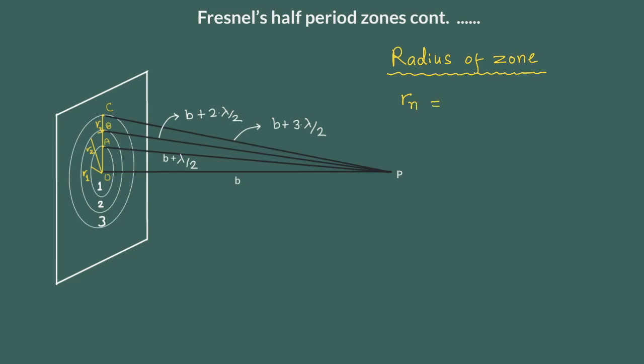If we have n zones, radius of nth zone can be given as root of nb lambda where b is the distance between the observation point p and pole of the wave o.